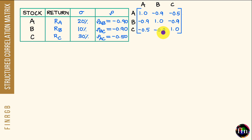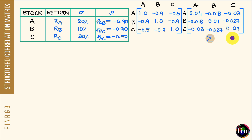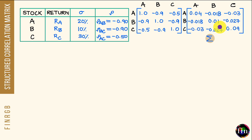I can combine the information in this correlation matrix with the individual standard deviations or volatilities of returns to create a 3×3 variance-covariance matrix. In the variance-covariance matrix, you will have the individual variances sitting along the diagonal and the pairwise covariances sitting in the non-diagonal positions. The variance of RA is 0.2 squared, the variance of RB is 0.1 squared, and the variance of RC is 0.3 squared.